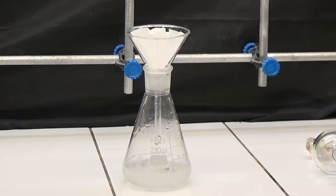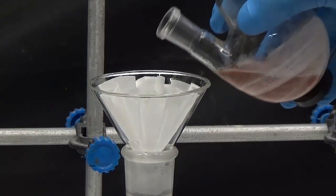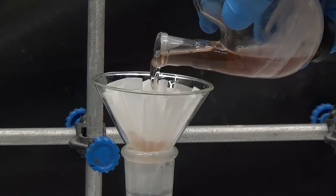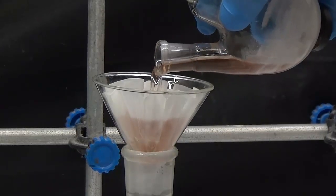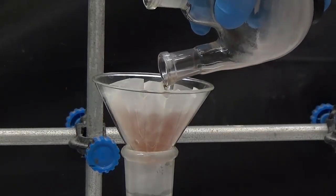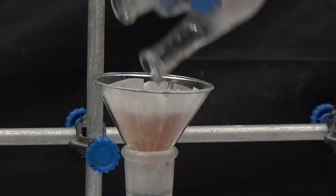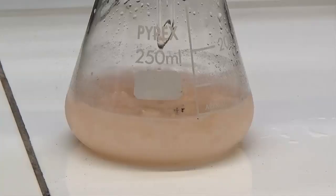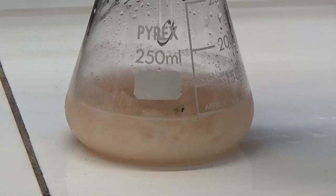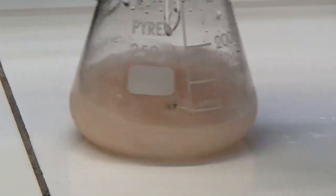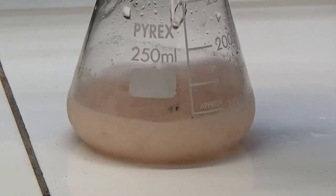Without cooling, the solution is filtered by folded paper into an Erlenmeyer flask containing 80 ml of water and ice. One observes the formation of a white phenacetin precipitate.